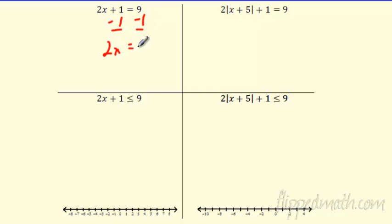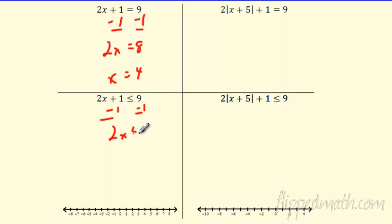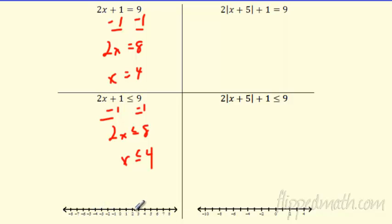So no problem when it's an equal sign. X is four. Got that down. What happens when we throw the inequality in there? Remember we got this inequality right here, the less than, greater than sign. Nothing changes, right? It's the same rules. You follow the exact same rules. The difference is, instead of getting one answer, you're getting a whole solution set. So instead of x equaling four, x is everything less than or equal to four.